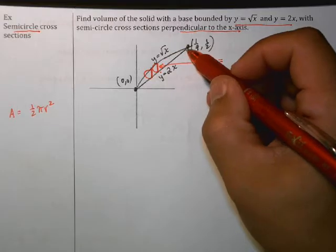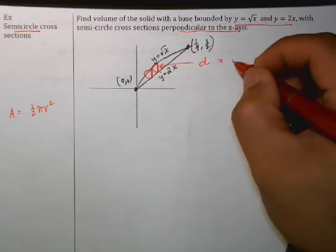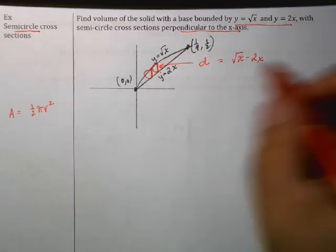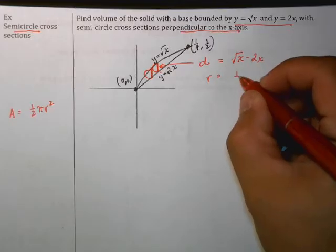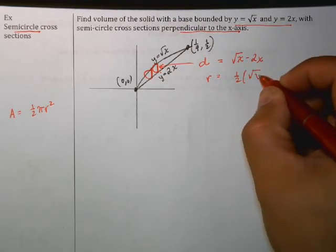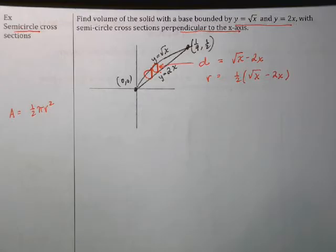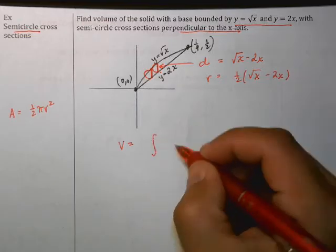The top curve is y equals square root x and the bottom curve is y equals 2x. So d is equal to root x minus 2x, and that's the diameter. So that means the radius then is equal to one-half square root of x minus 2x, and this is a simple enough problem.